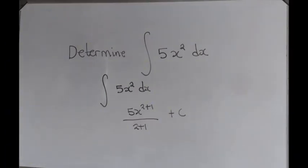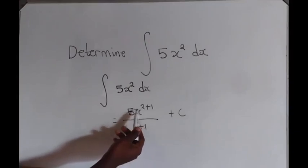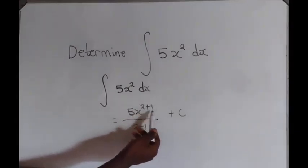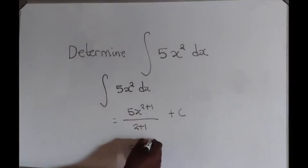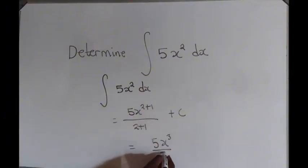So from there, we are going to get something like this: 5x to the power 2 plus 1. We are going to add this, then we will get 5x to the power 3, because 2 plus 1 we get a 3, over 3, then plus C.